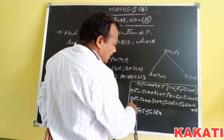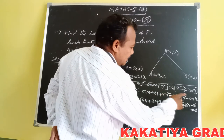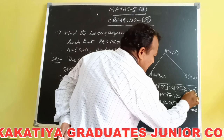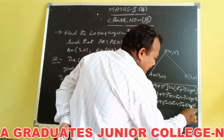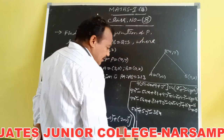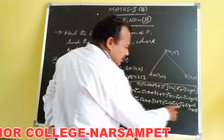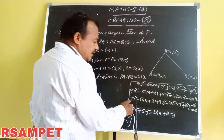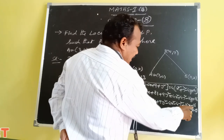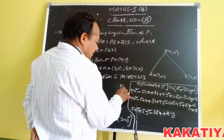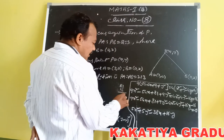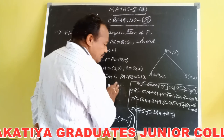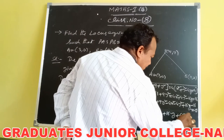For the Y terms: in the expansion of Y minus 2 whole square, we get 4 times 4Y giving 16Y. There are no Y terms on the left-hand side, so we have plus 16Y. For the constant terms: 81 minus 16 gives 65, so plus 65 equals 0.